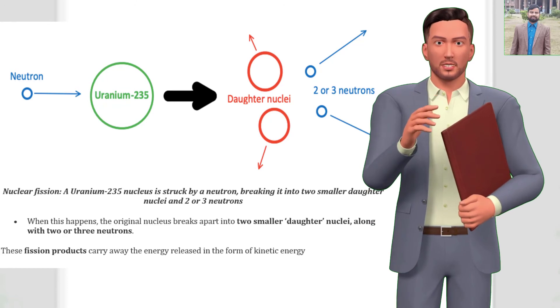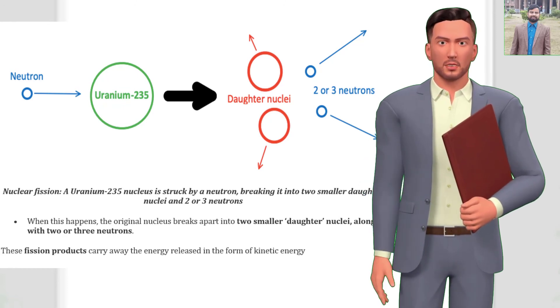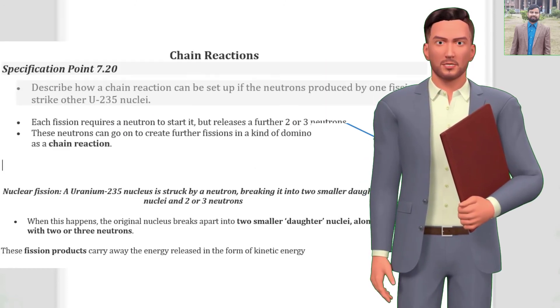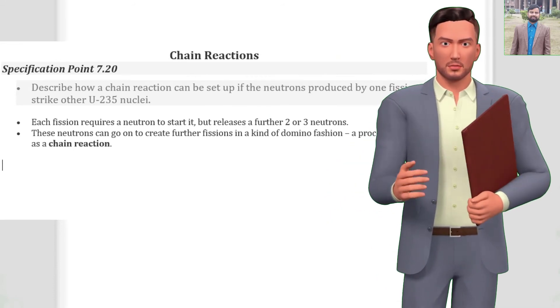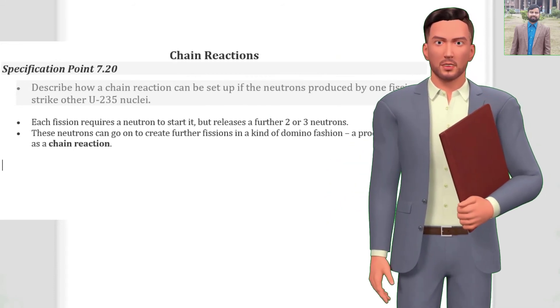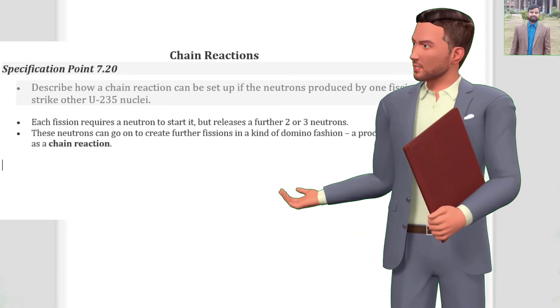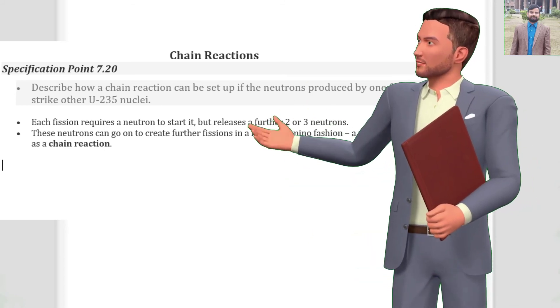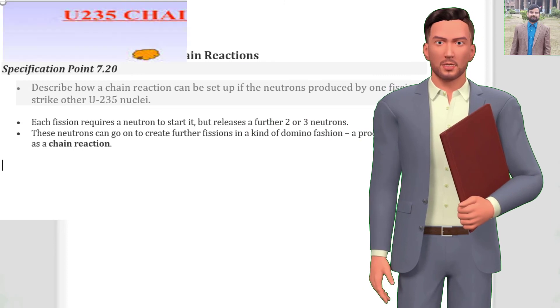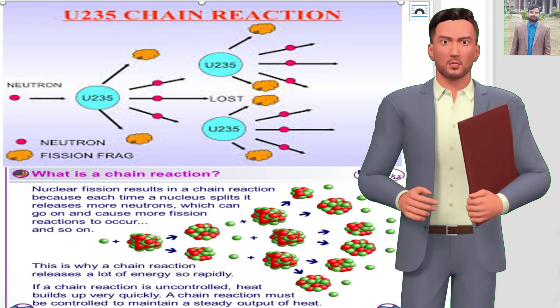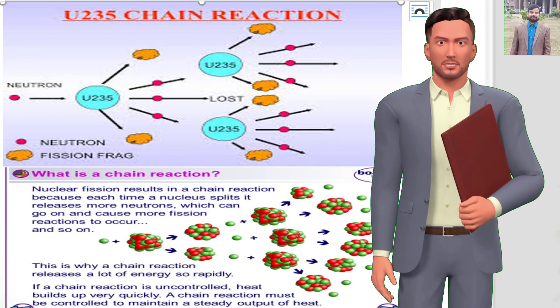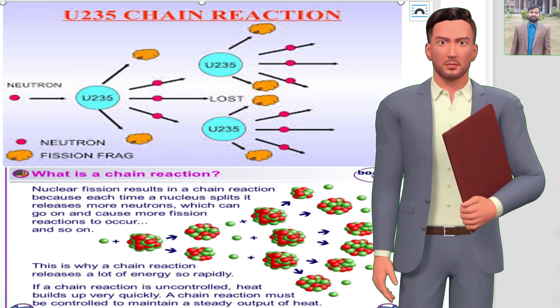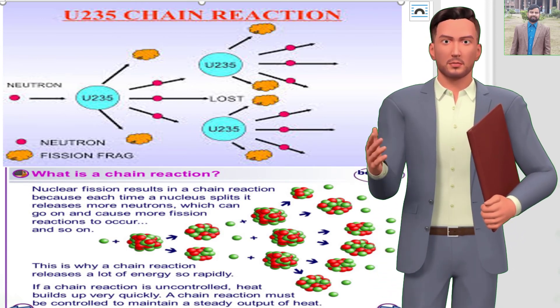These fission products carry away the energy released in the form of kinetic energy. Chain reaction specification point 7.20. Describe how a chain reaction can be set up if the neutrons produced by one fission strike other U-235 nuclei. Each fission requires a neutron to start it, but releases a further two or three neutrons. These neutrons can go on to create further fissions in a kind of domino fashion, a process known as a chain reaction.